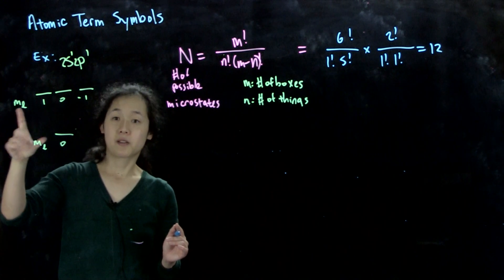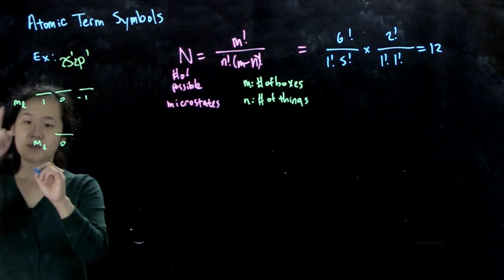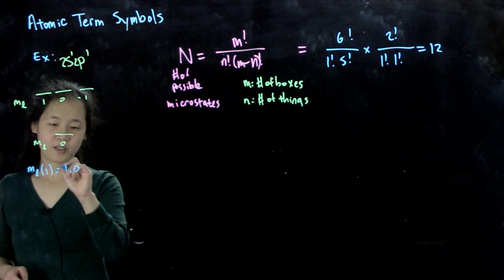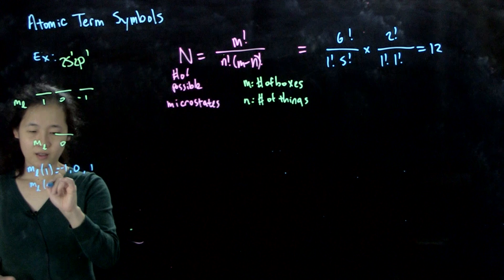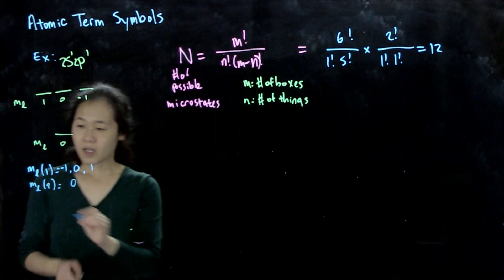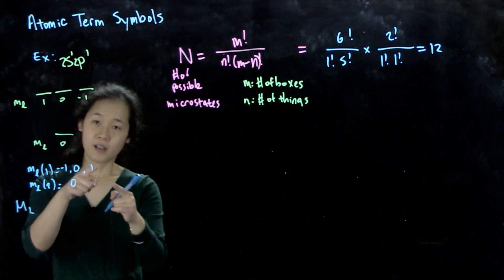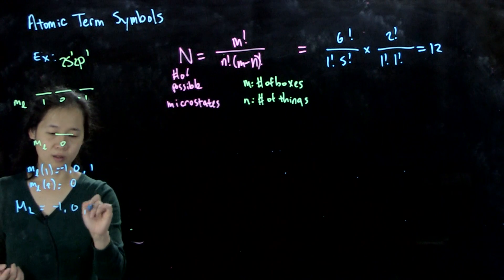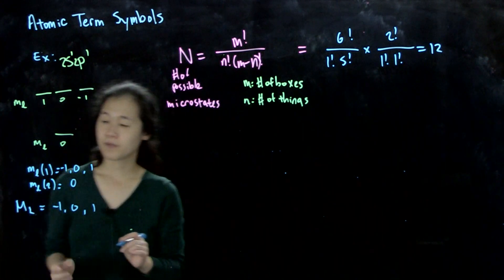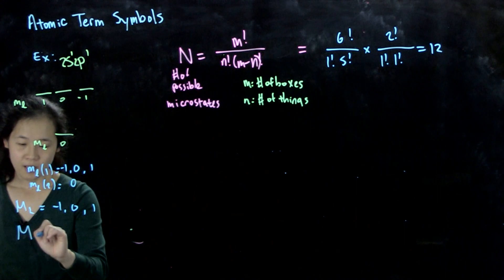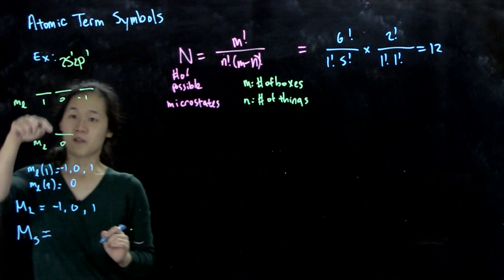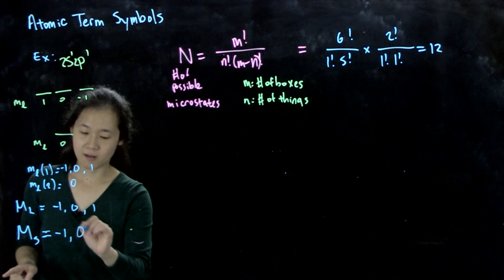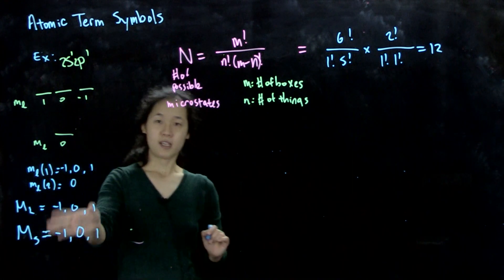Let's figure out what our big M_L values could be. Little m_L of electron 1 (the p electron) can be 1, 0, or minus 1. Little m_L of electron 2 (the s electron) equals 0. So big M_L ranges from minus 1 to plus 1. For spin, both electrons can both be down (M_S = minus 1), paired (M_S = 0), or both up (M_S = plus 1).